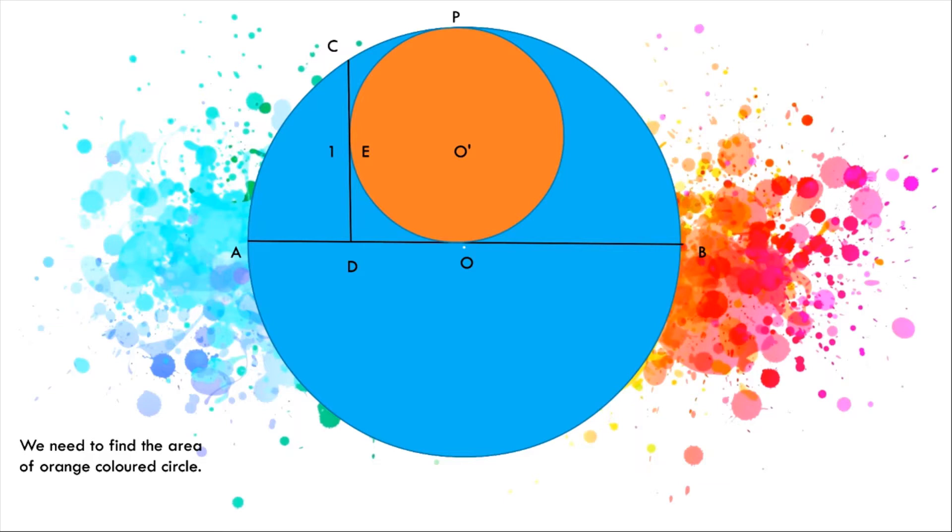We need to find the area of the orange circle. To do this, we need to find the radius of the orange circle. If we can solve for that, we'll get the answer.